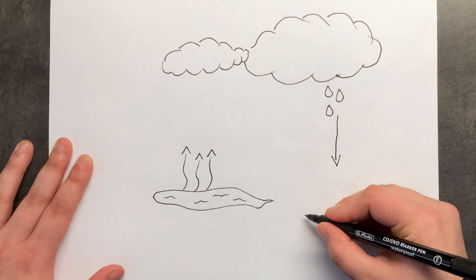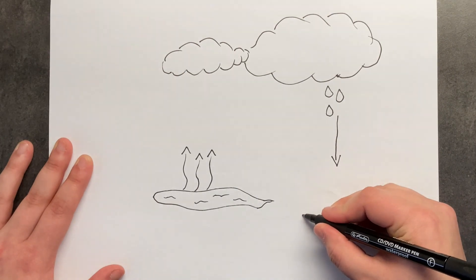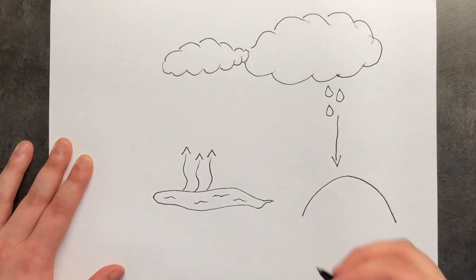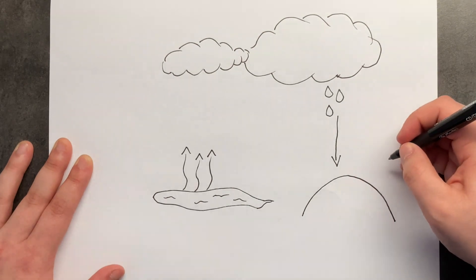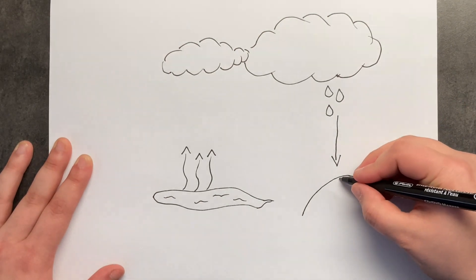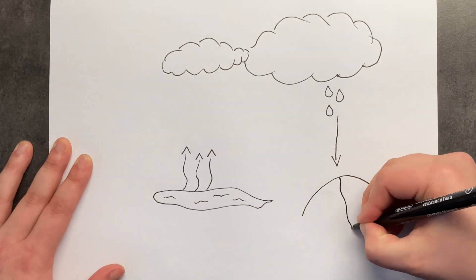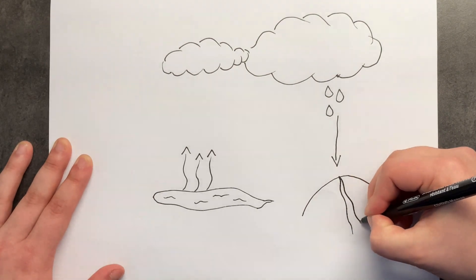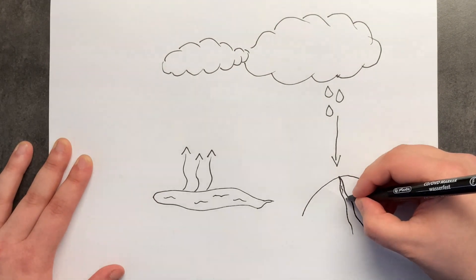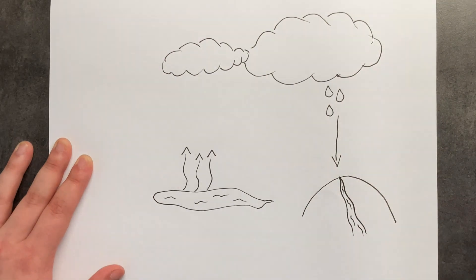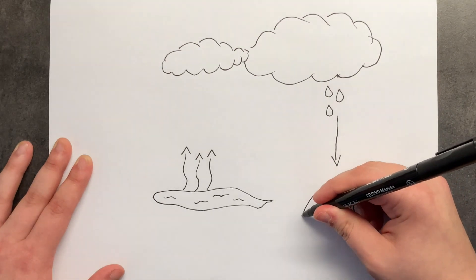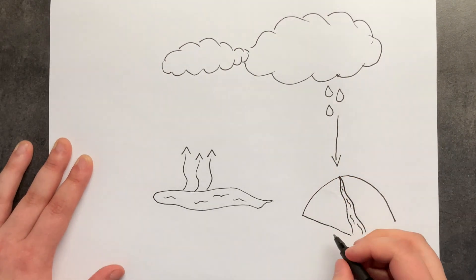And say there was a hill like this, and if the rain falls down on the top of the hill, it needs to come down somehow — and this is where we get rivers. So the water will start to flow down the hill, and water will also evaporate from the river, same as the lake, same as any body of water.